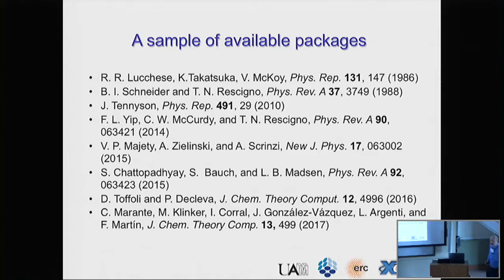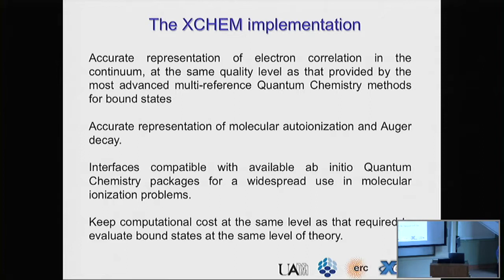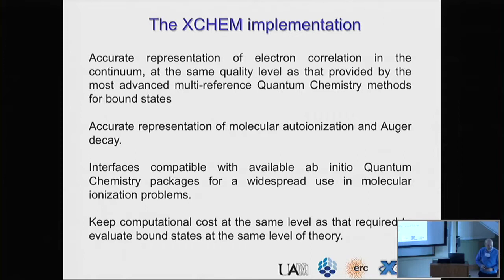Let's focus on this method. This is not the only method that exists — there are others proposed by other people, many of them here in this room, and the list is not complete at all. What makes our approach slightly different from the existing ones is that it comes from a quantum chemistry point of view. We take advantage of what is already existing in the quantum chemistry world and incorporate what is missing in order to describe resonant ionization or Auger decay. The key point is that we have developed an interface compatible with existing quantum chemistry packages so that it can be easily incorporated, used to describe ionization — something you cannot do with any existing quantum chemistry package.